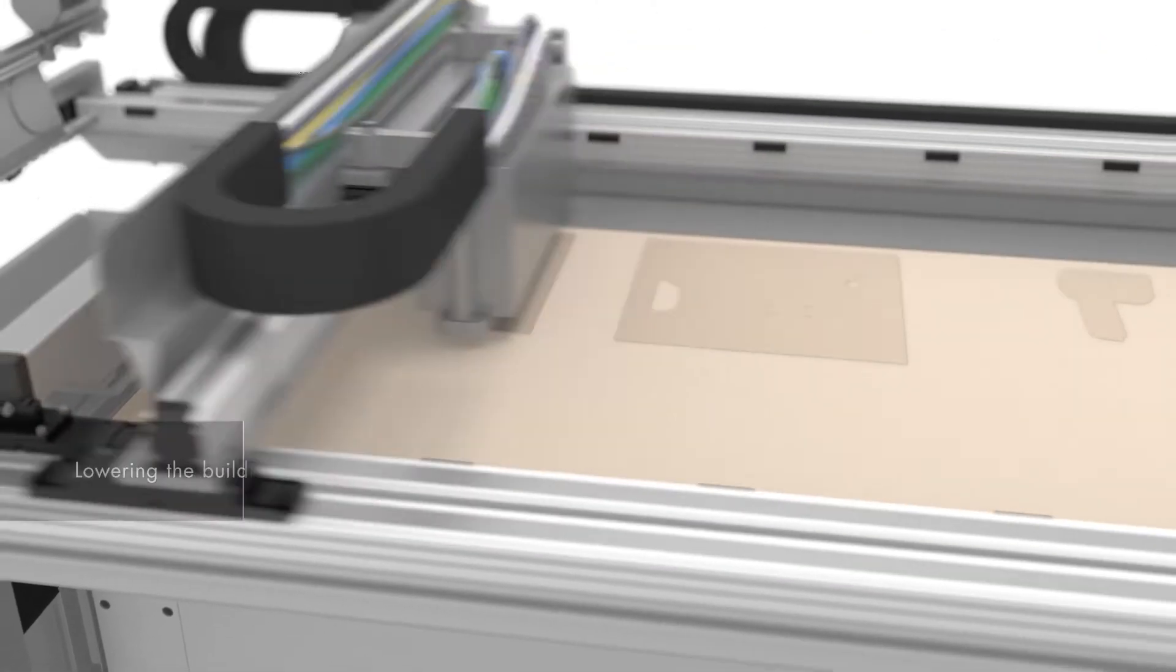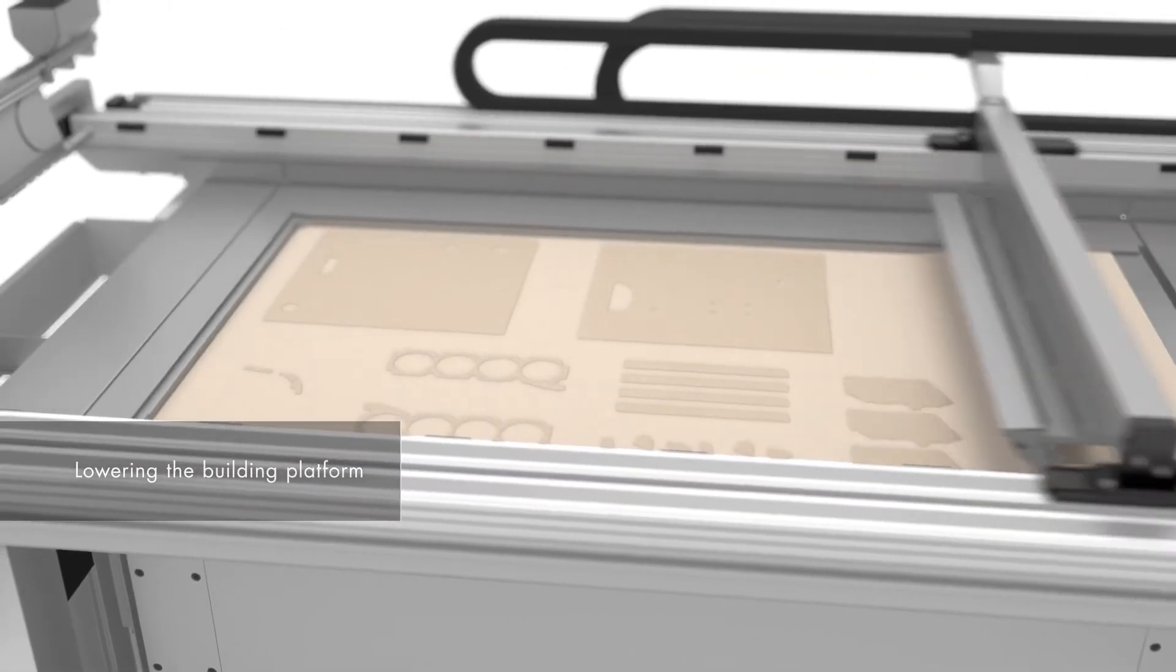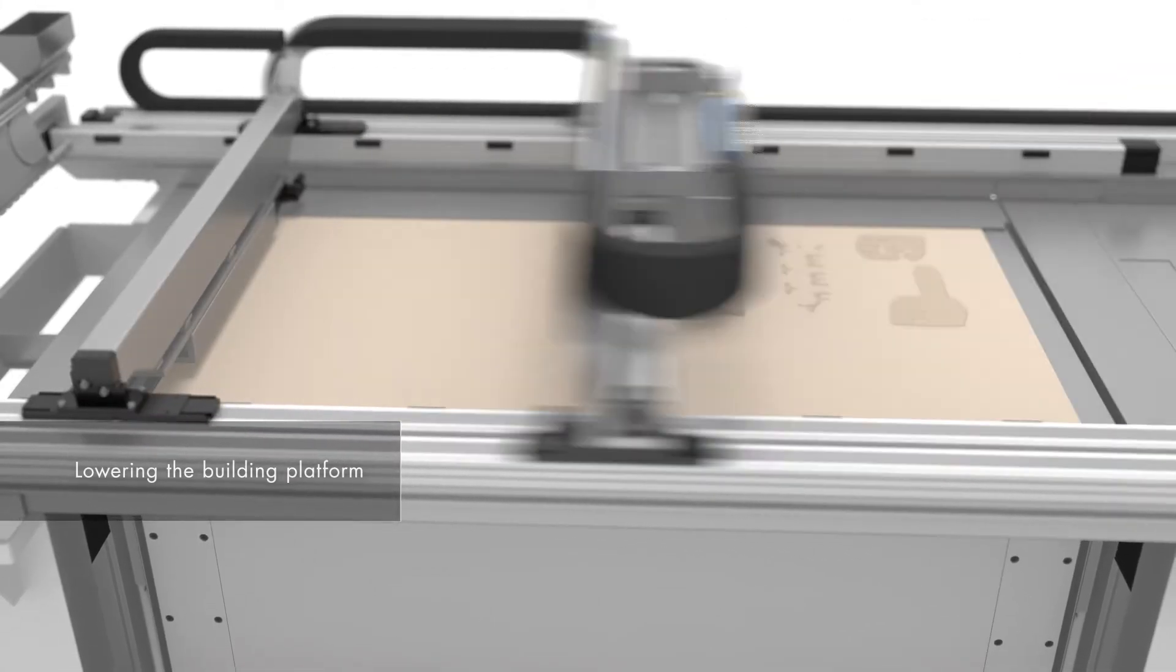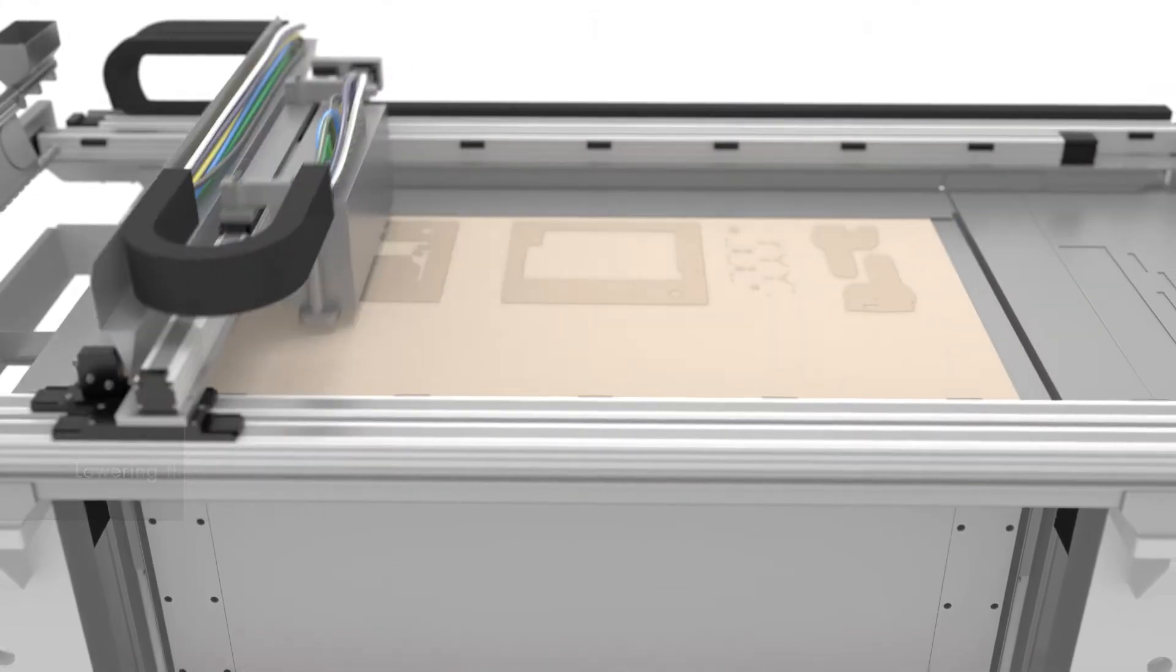The building platform of the job box lowers by the layer thickness. This process is repeated until the components are completely printed.